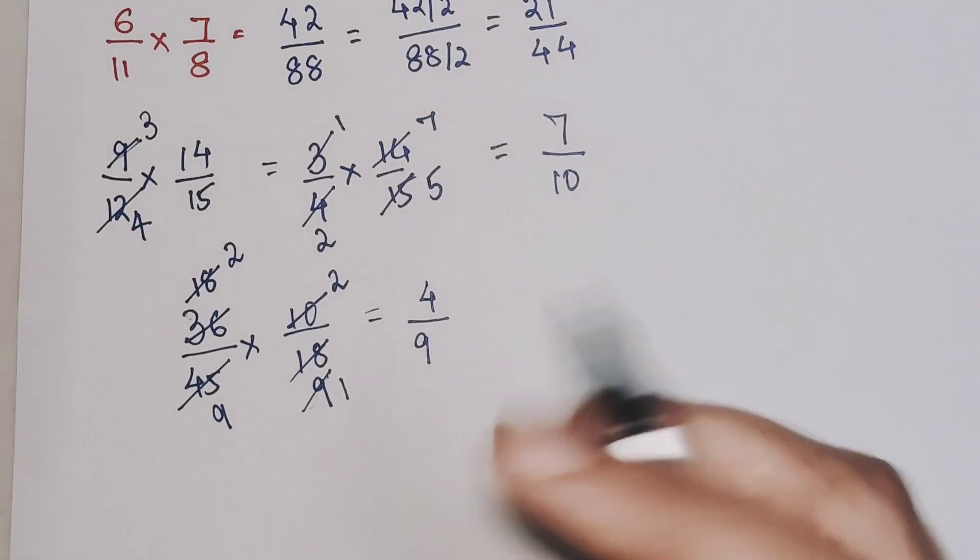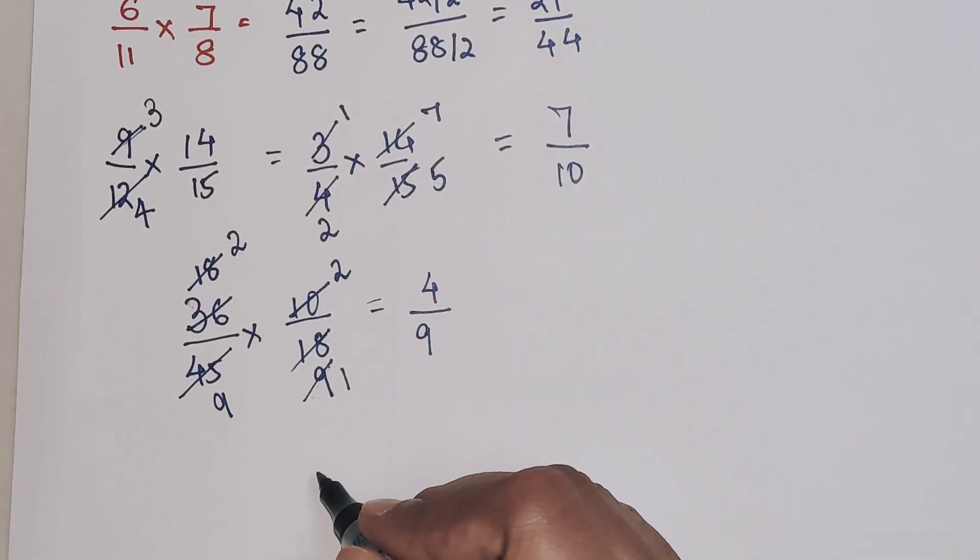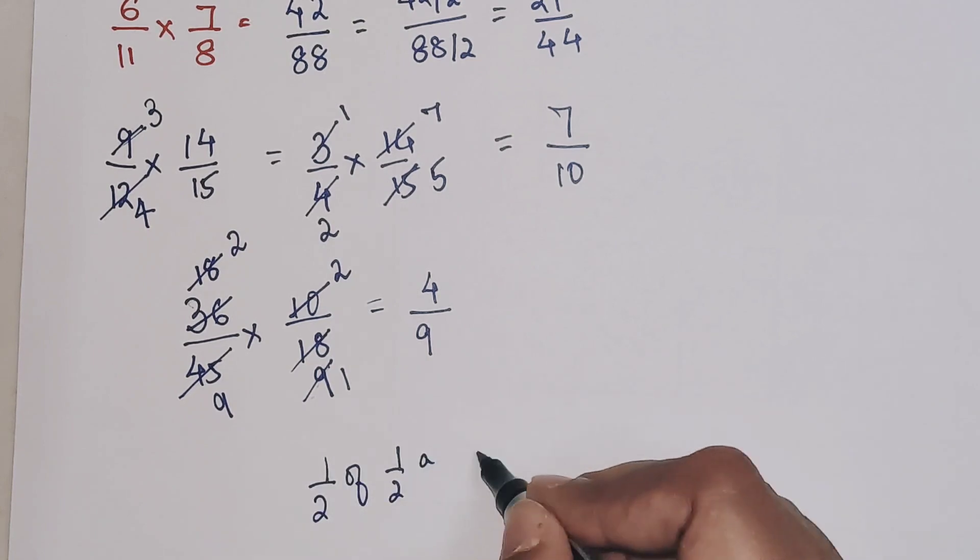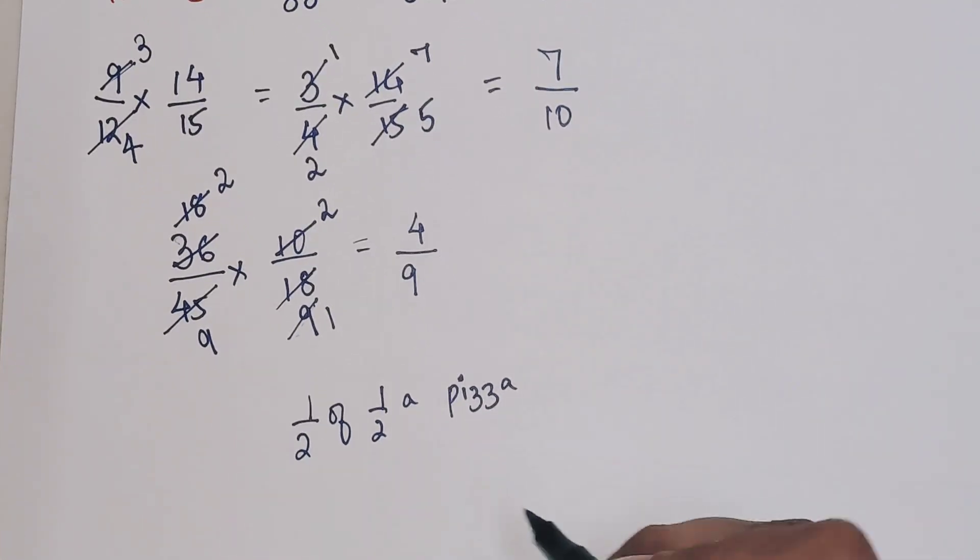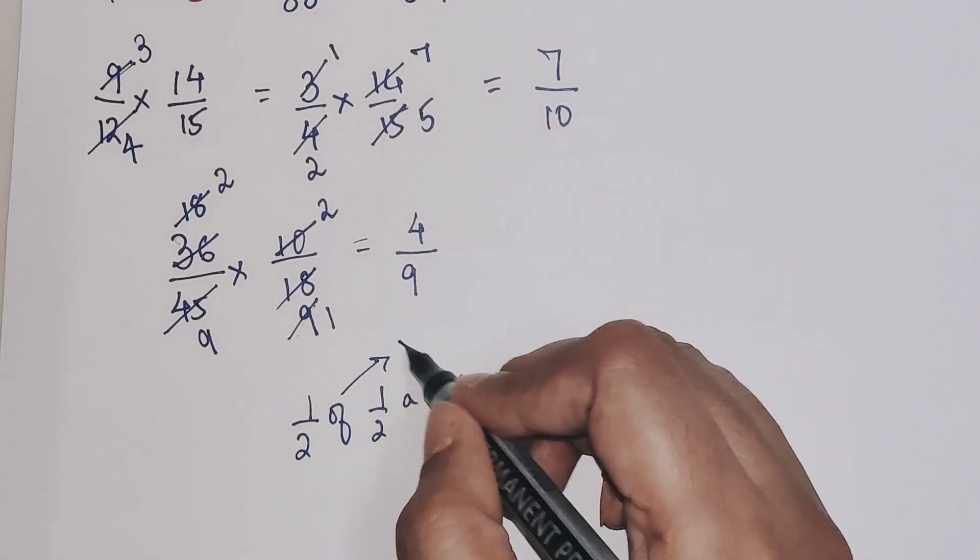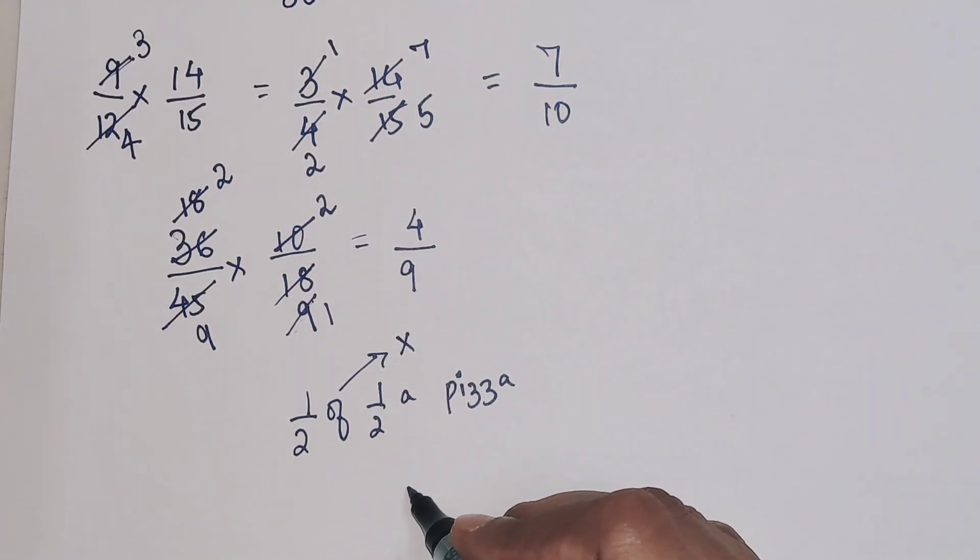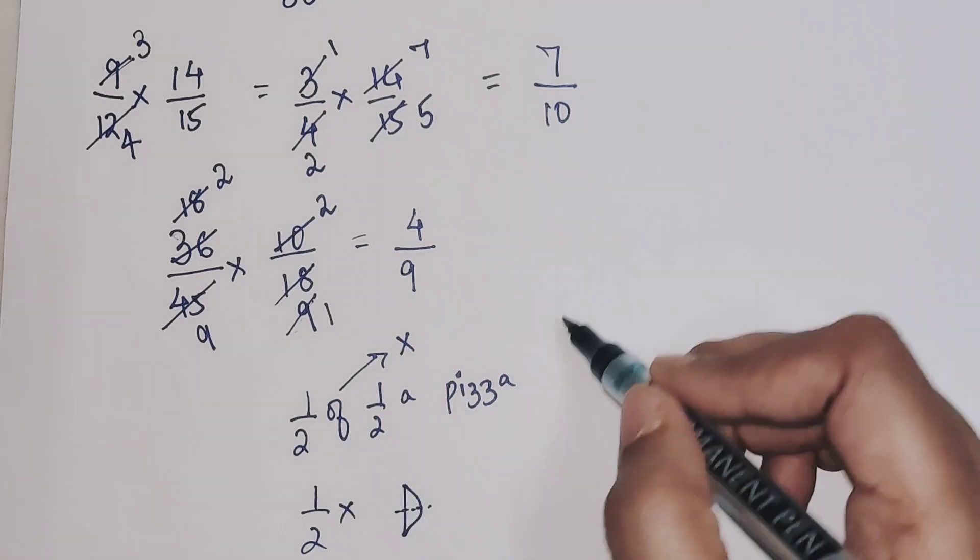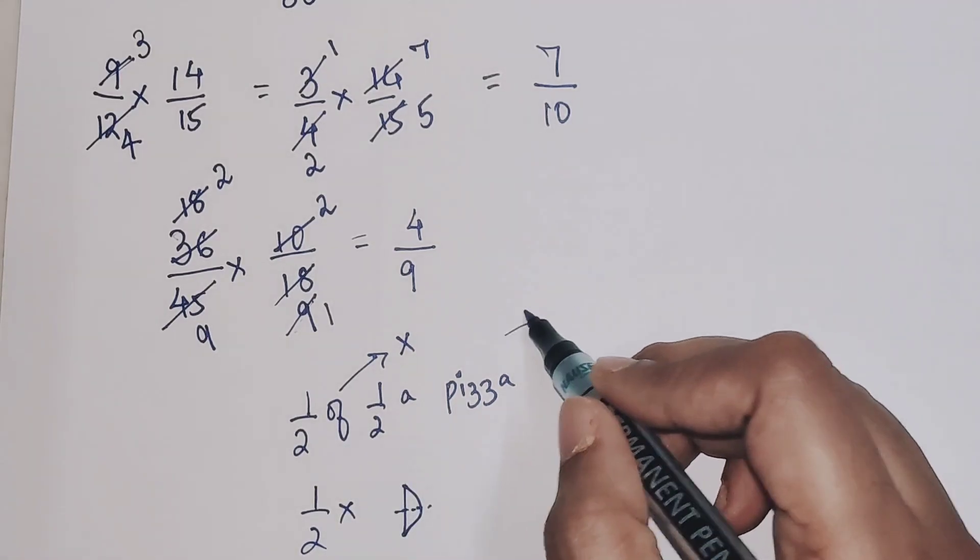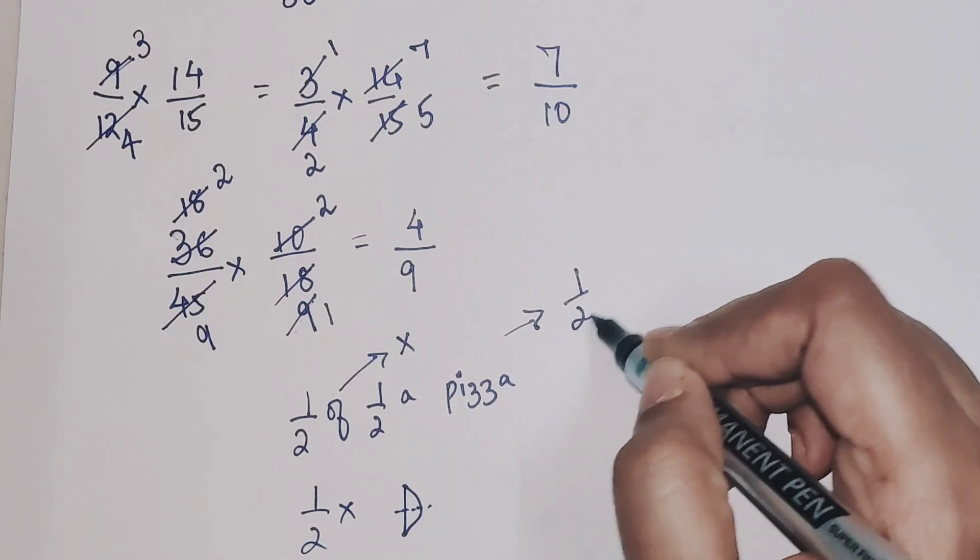Also remember in word problems, if you had to find, let's say, half of half a pizza. Whenever something like that, off means what? Multiplication. Meaning, see if this was like half of your pizza, and you wanted half of that, so meaning this much.